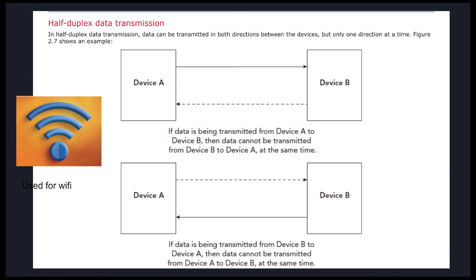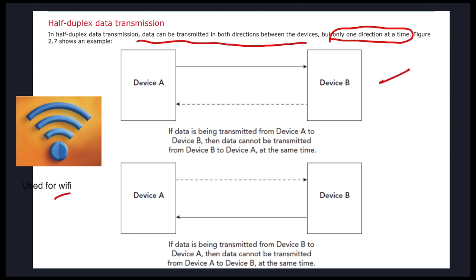In half-duplex data transmission, data is transmitted in both directions, but only one direction at a time. This is used for Wi-Fi, and a good example is walkie-talkies — you say something, indicate the end of your message, then wait for the other person to respond; you can't talk at the same time. So data can go from Device A to Device B, but at that time it cannot simultaneously go from Device B to Device A, and vice versa.